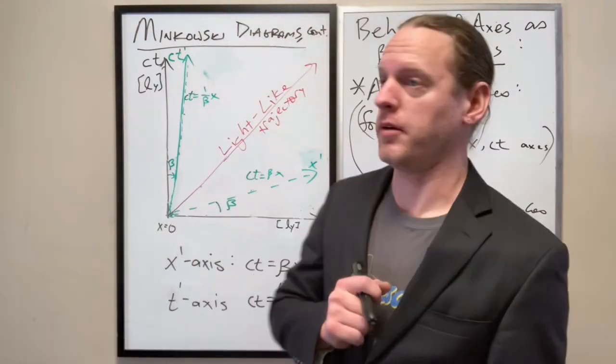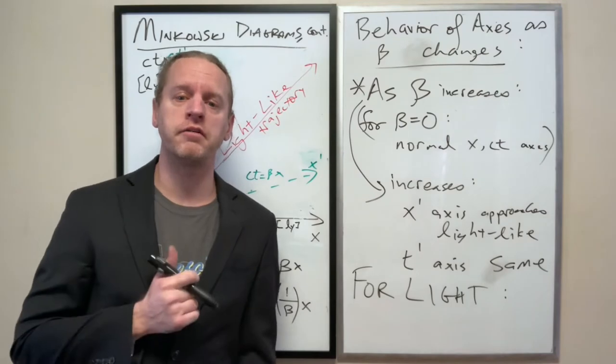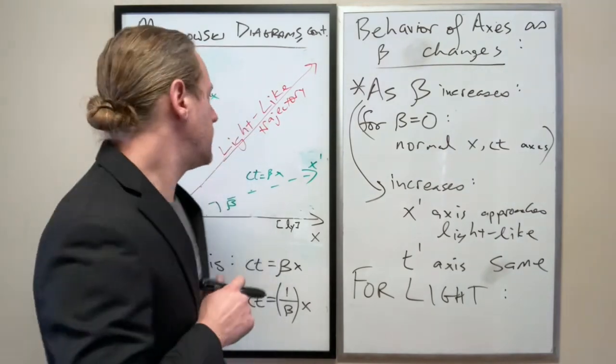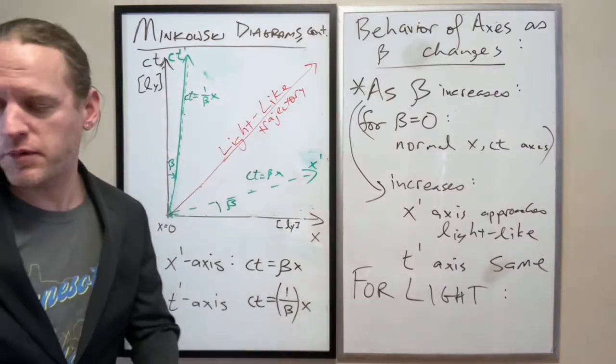So I want to ask a really interesting question here. If you wanted to consider the order of events in, say, this frame here, in the green prime frame.